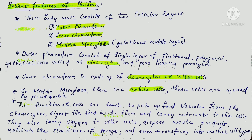The outer pinacoderm consists of a single layer of polygonal epithelial cells called pinacocytes, and it contains pore-bearing porocytes. So pinacoderm has two cell types: pinacocytes, which are the polygonal epithelial cells, and porocytes, which are the pore-bearing cells.